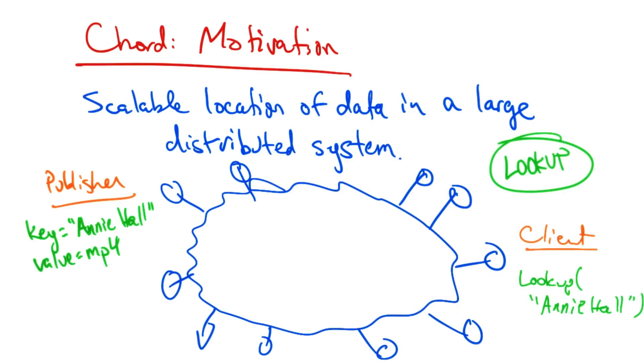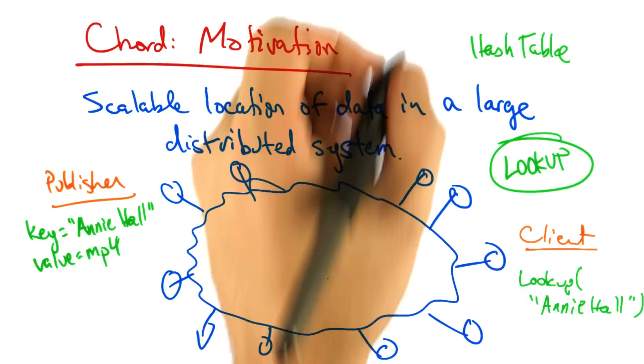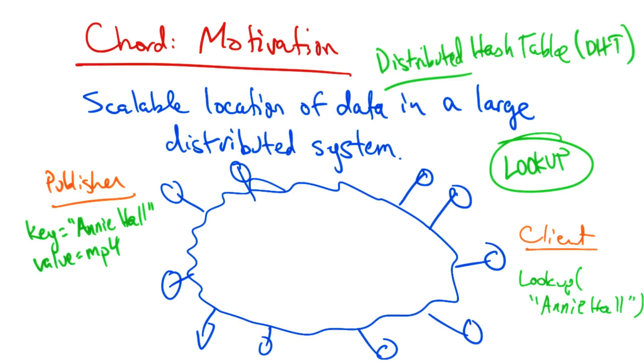The key problem that we need to solve here is lookup, and you can see that the function that needs to be provided is just a simple hash table. But the thing that makes this problem interesting is that the hash table isn't located in one place, but that it's distributed across the network.